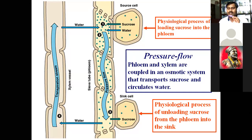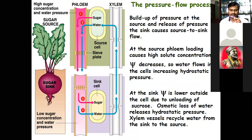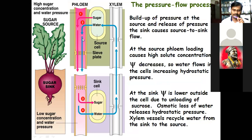Both phloem and xylem are involved in transporting sucrose and circulating water — this is the important physiological process involved in the transfer of food material, and because of that it is called translocation. Again, the source is where sugar is produced; it moves to the phloem and phloem moves this food to the sink, while in replacement water continuously moves to the xylem.